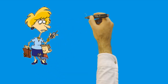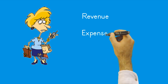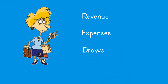A refresher: revenues, expenses, and draws are sub-categories of owner's equity. Think of owner's equity as a mom with three children — revenue, expense, and draws. Revenue keeps track of increases in owner's equity; expense keeps track of decreases from business operations; draws keeps track of decreases from owner withdrawals for living and personal expenses. At the end of our period, we summarize all these activities and transfer their balances to the owner's equity capital account.